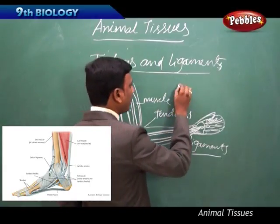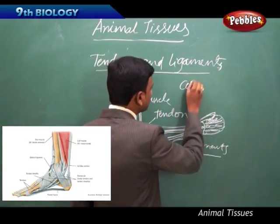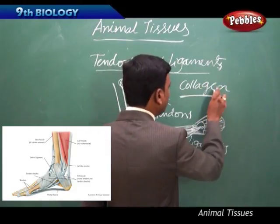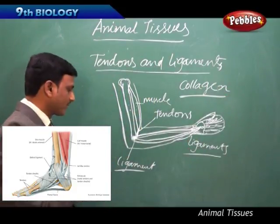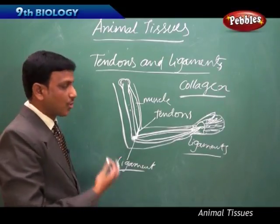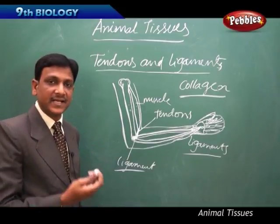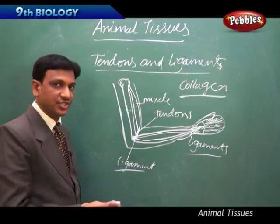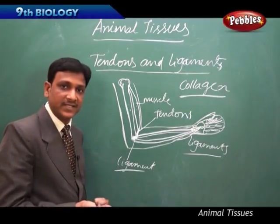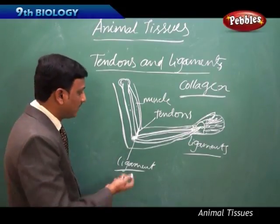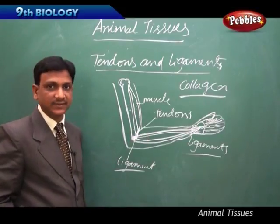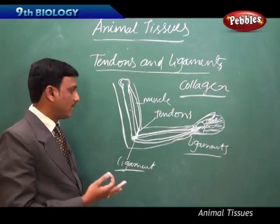These fibers are made up of a material called collagen. Collagen is the material from which the elastic fibers of ligaments and tendons are made. Because of that strong elasticity, they keep our bones in position and help us to lift things and do heavy work. That is all because of the elasticity of these tendons and collagen which attach the bones and muscles together.